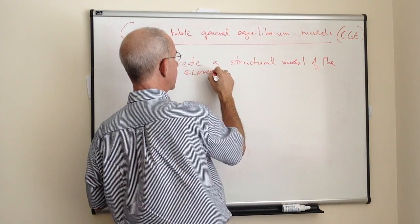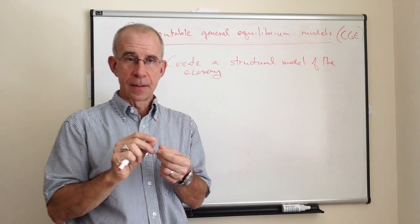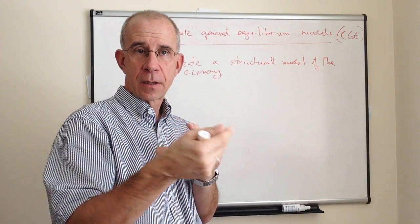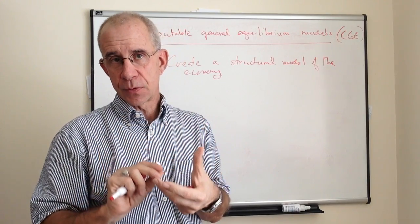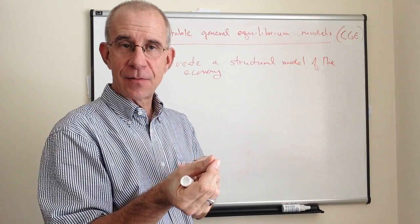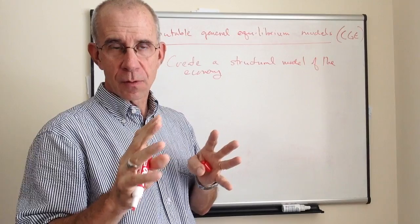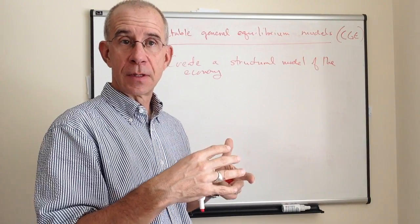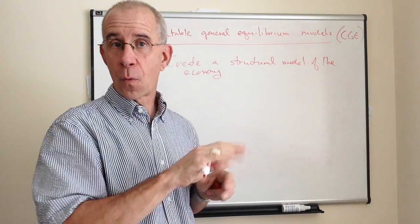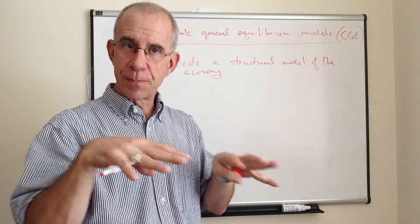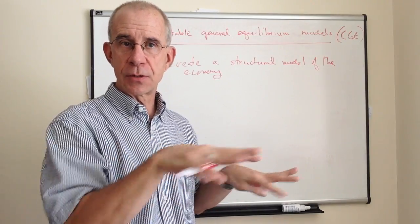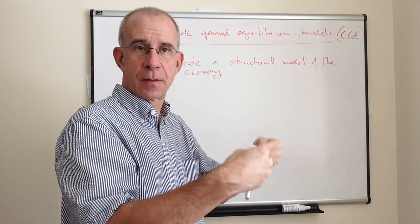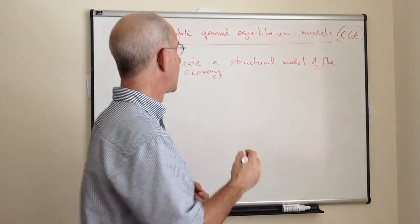The first thing is that what a modeler would do is to create a structural model of the economy. What do I mean by that? That means you're looking at the way in which consumers and producers interact. It's looking at the sensitivity of, in general, of consumers to price changes, how sensitive consumers are to the price of a foreign product. You're building up all these different relationships. What types of inputs go into intermediate production and then into final production.